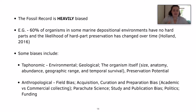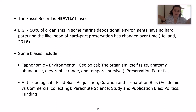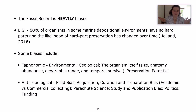As well as this, study and publication bias plays a huge part in what organisms get their names out there. For example, if we have a T-Rex and a trilobite, more people are going to study the T-Rex. And if you publish about T-Rex more than a trilobite, you're going to get more publicity with the T-Rex.